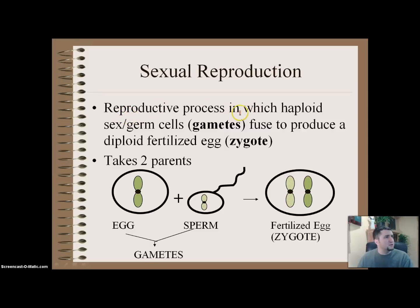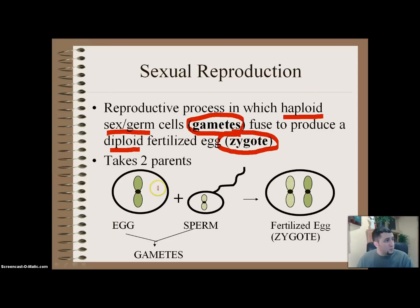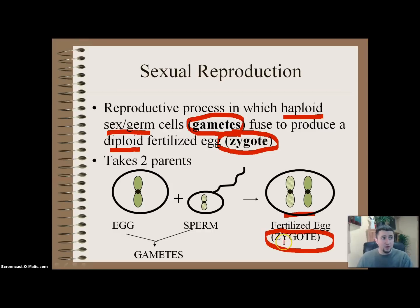Reproduction involves haploid cells — sex cells from mom or dad called gametes — fusing together to produce a diploid fertilized egg called a zygote. So to review: we have the egg from mom and sperm from dad, and when they come together we get a 2N diploid organism. That combined cell is called the zygote and eventually forms a fetus and then a whole new human being.